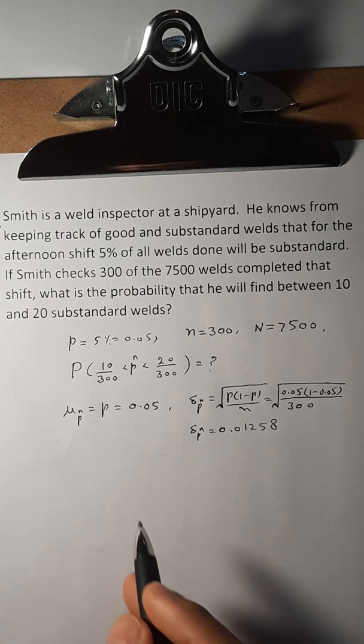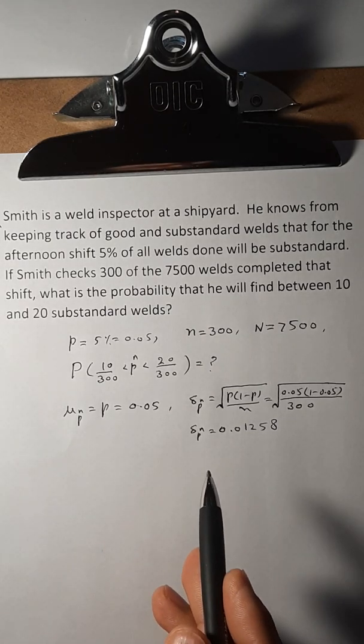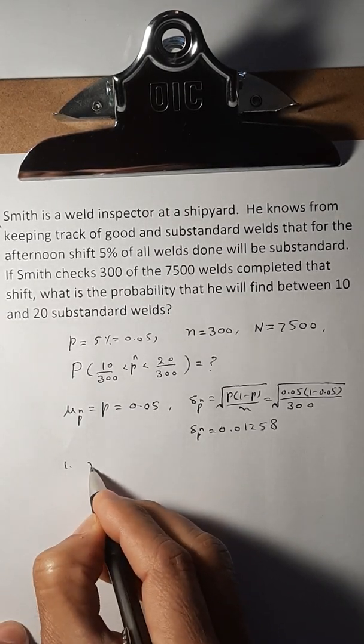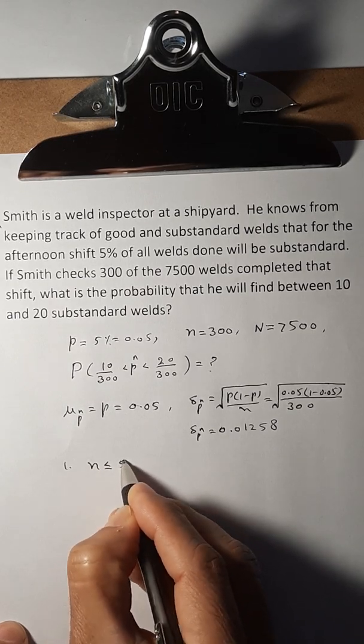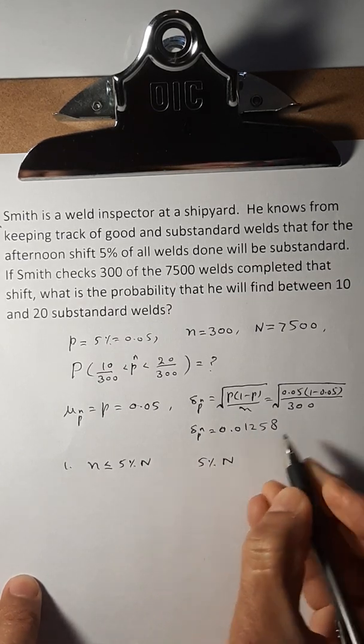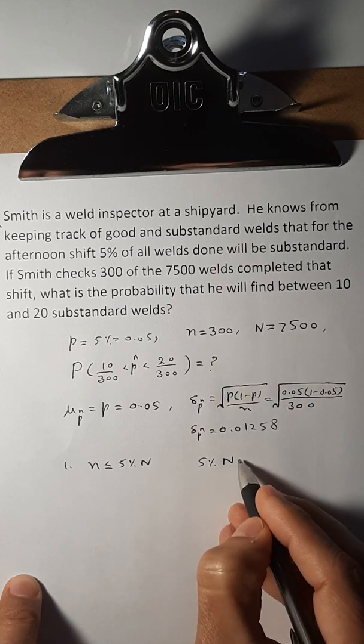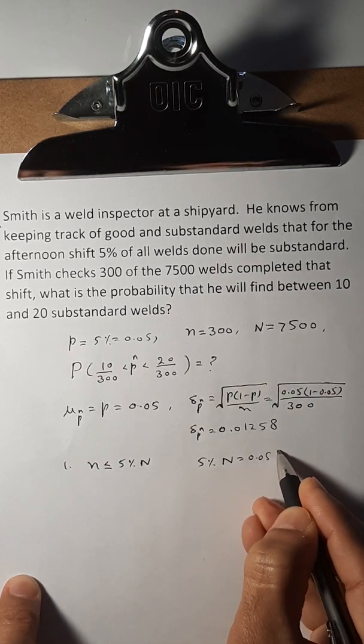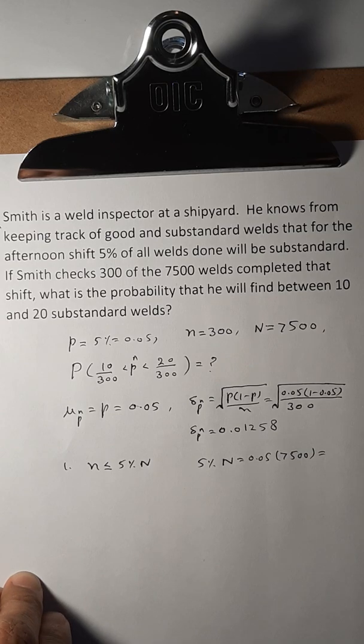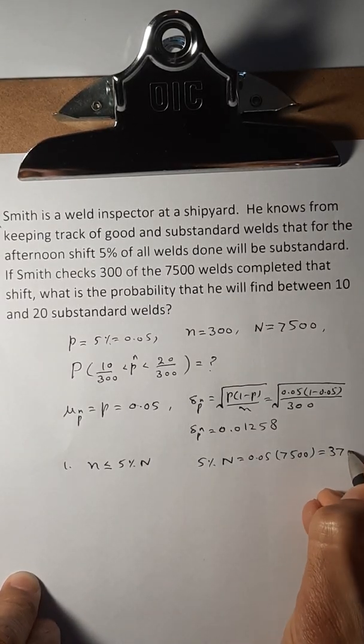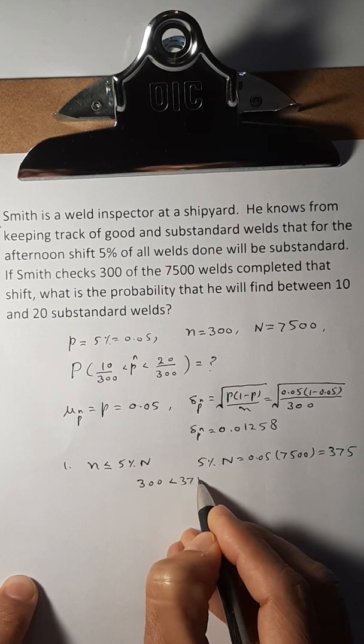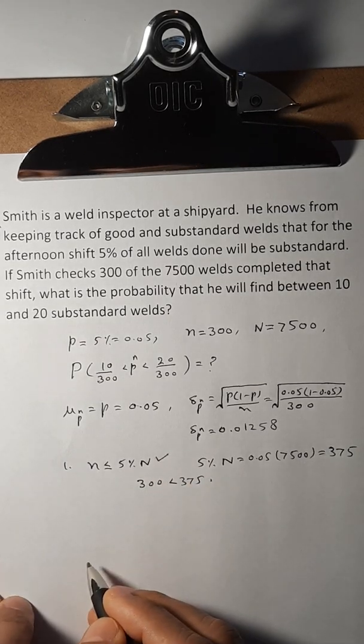Next thing we have to check: is this sampling distribution approximately normal or not? In order for this model to work, the first thing we have to check is that the sample size is less than or equal to 5% of the population size. In this case we know that the population is 7500, so 5% of that, 0.05 times 7500, turns out to be 375. And we know that 300 is definitely less than 375, so this condition is true.